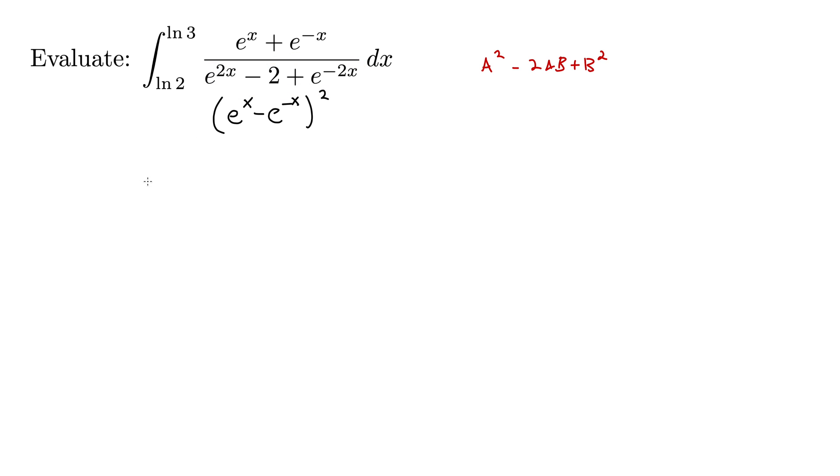Rewriting the whole integral then gives the integral from natural log 2 to natural log 3 of e to the x plus e to the minus x all over e to the x minus e to the minus x squared dx.